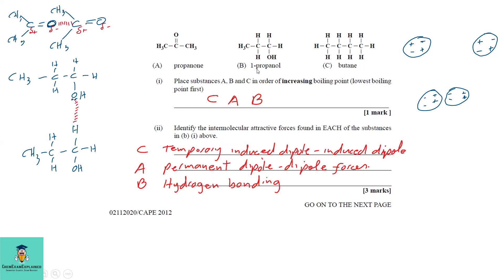In propan-1-ol, the H in one molecule feels an attractive force with an electronegative element in another molecule — in this case oxygen. Remember the electronegative elements relevant to hydrogen bonding are oxygen, nitrogen, and fluorine.